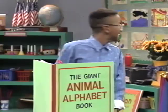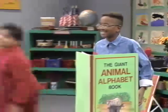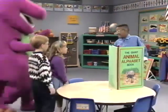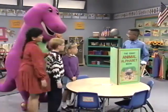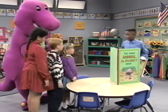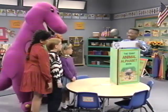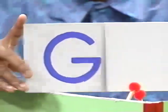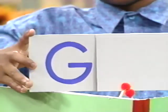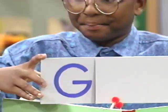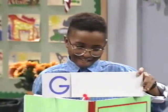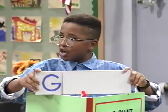Hey, everybody, see if you can guess the next zoo animal. Oh, okay. This animal's name starts with the letter G. And here's a riddle about them. I'm spotted all over from head to toe. My neck's very long.